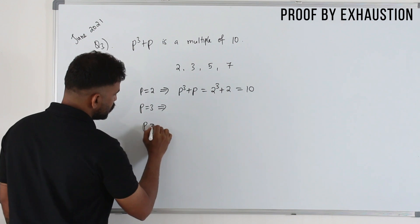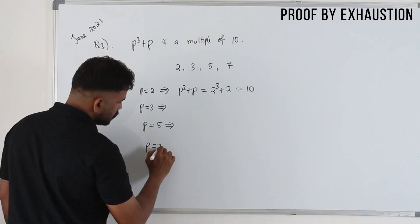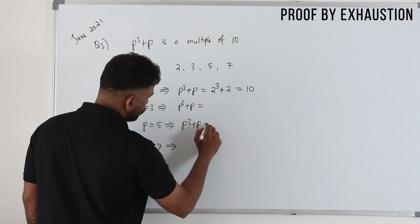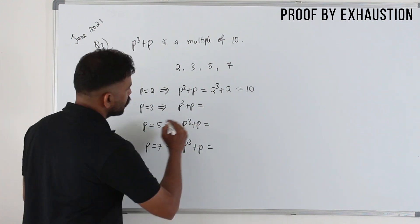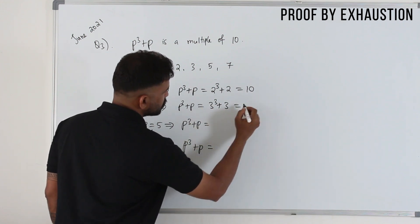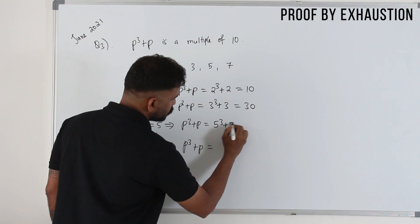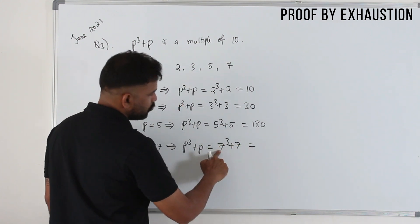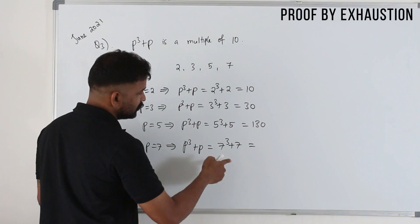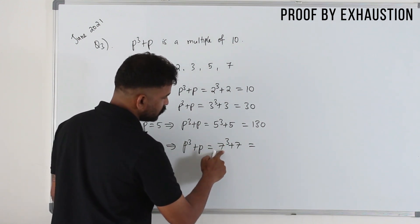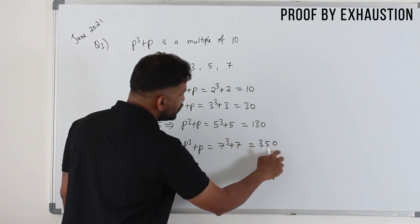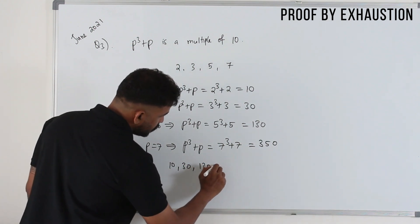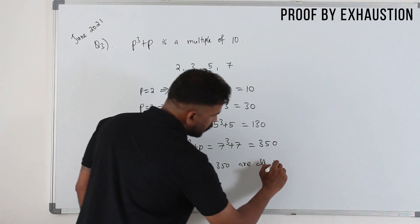You need to prove this for each and every case separately. For p = 3: 3³ + 3 = 27 + 3 = 30. For p = 5: 5³ + 5 = 125 + 5 = 130. For p = 7: 7³ + 7 = 343 + 7 = 350. All these numbers — 10, 30, 130, 350 — are multiples of 10.